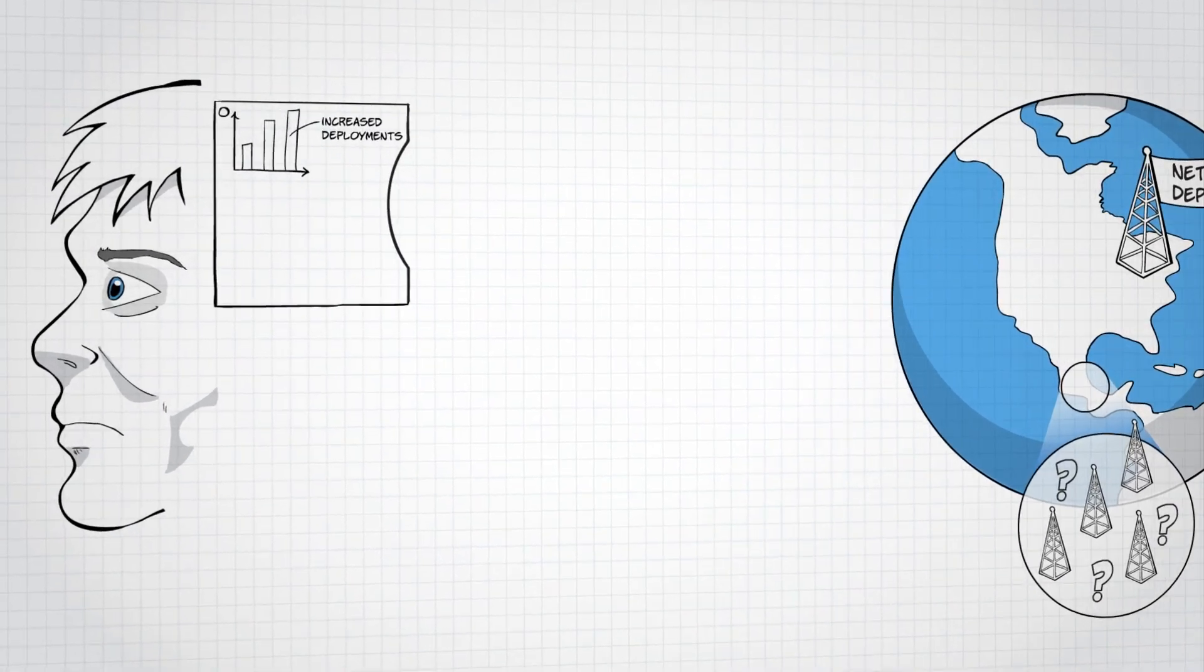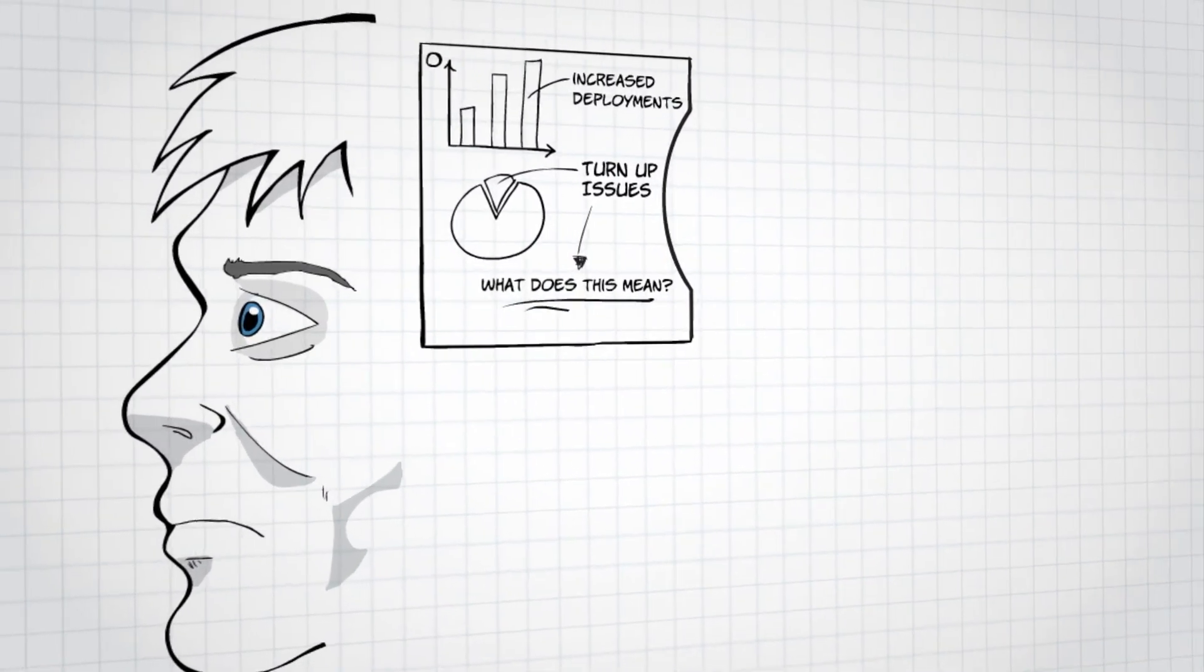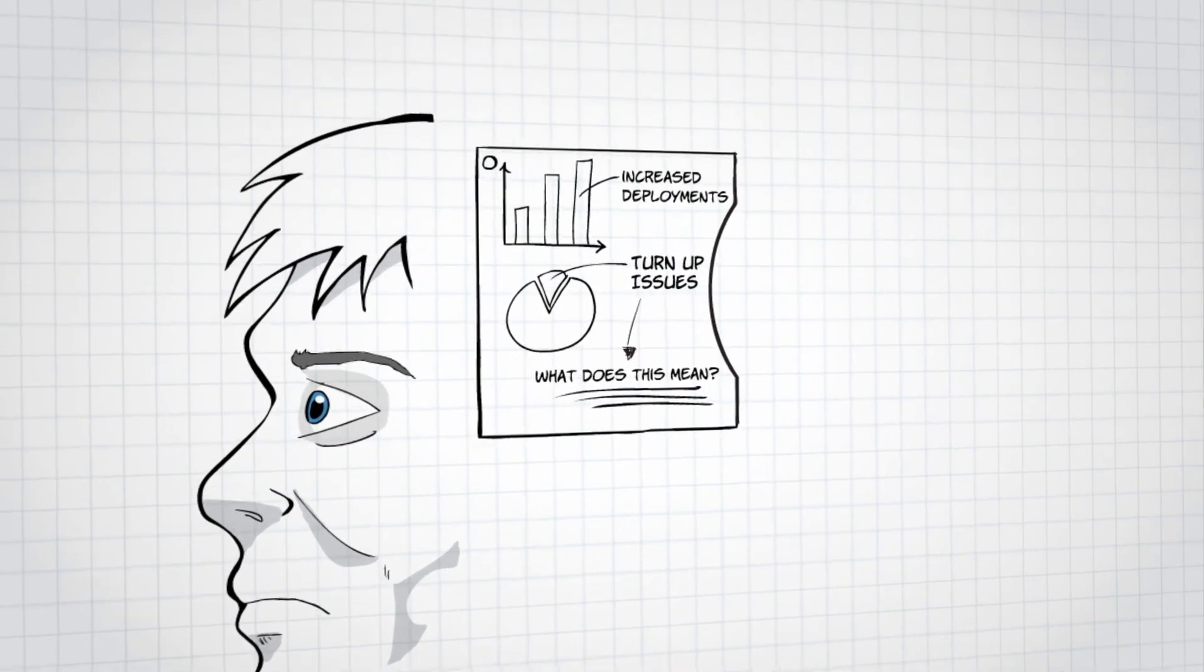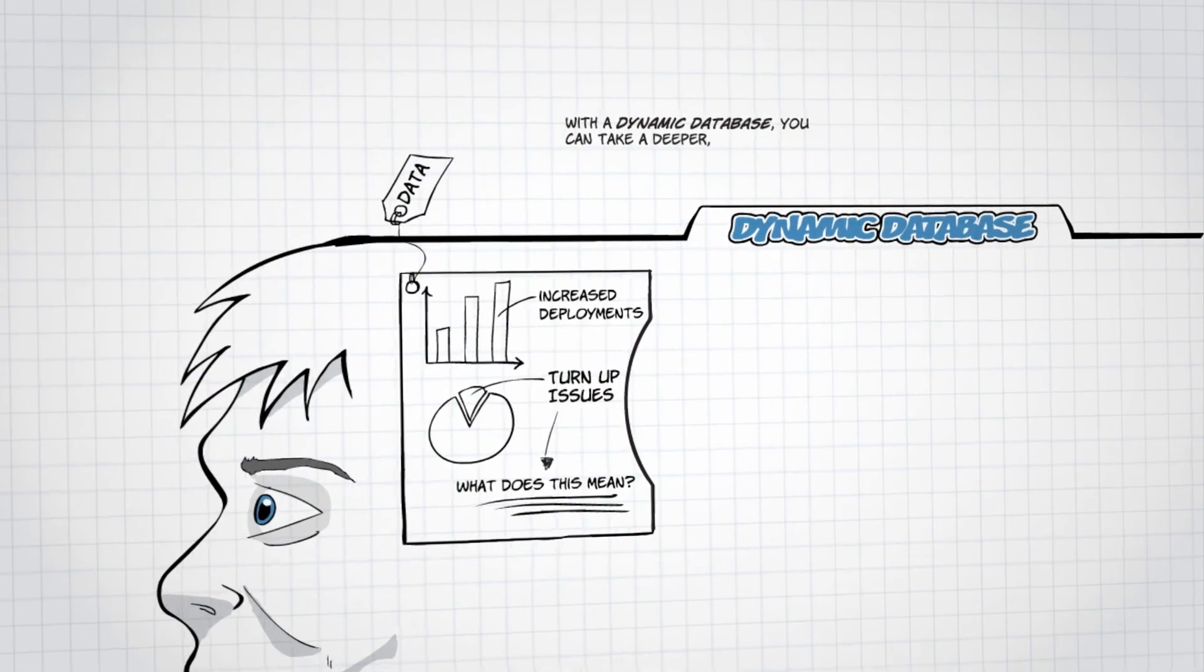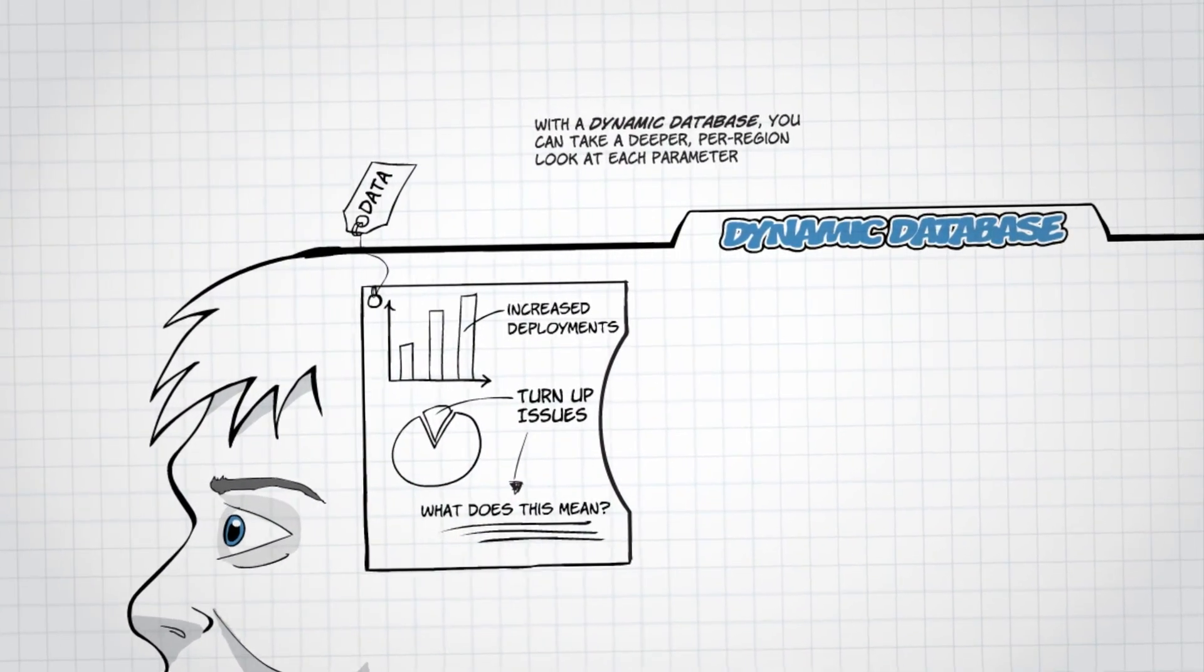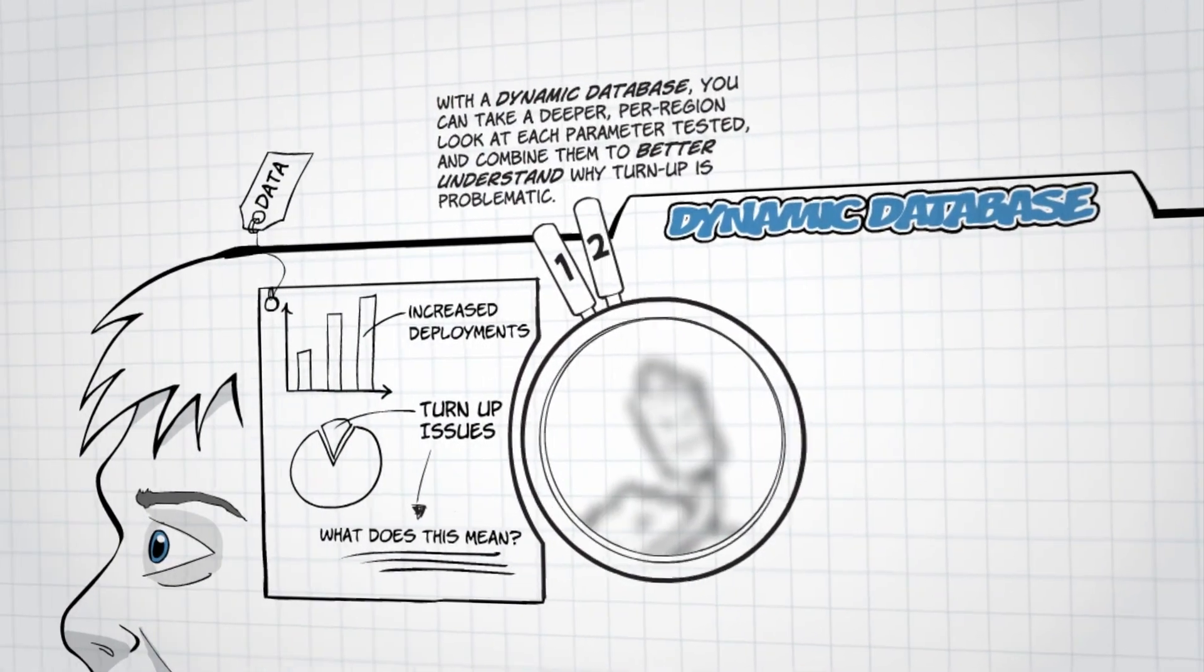For example, say you have turn-up issues somewhere in your network, but you just can't tell where exactly because you don't have the hard data from the field. With a dynamic database, you can take a deeper, per-region look at each parameter tested and combine them to better understand why turn-up is problematic.